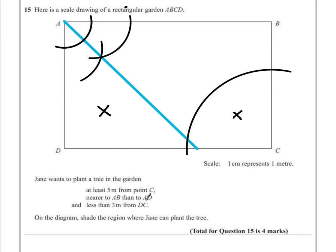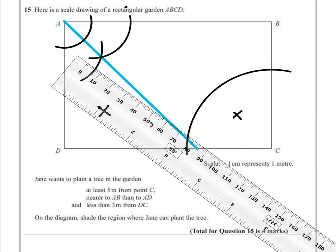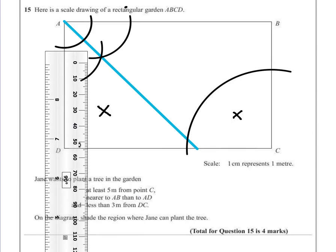Now the third and final rule says we must be less than 3 metres from DC. So this line DC at the bottom, to find 3 metres that's going to be 3 centimetres on our diagram, we're just going to use a ruler. The ruler works perfectly well on this one.